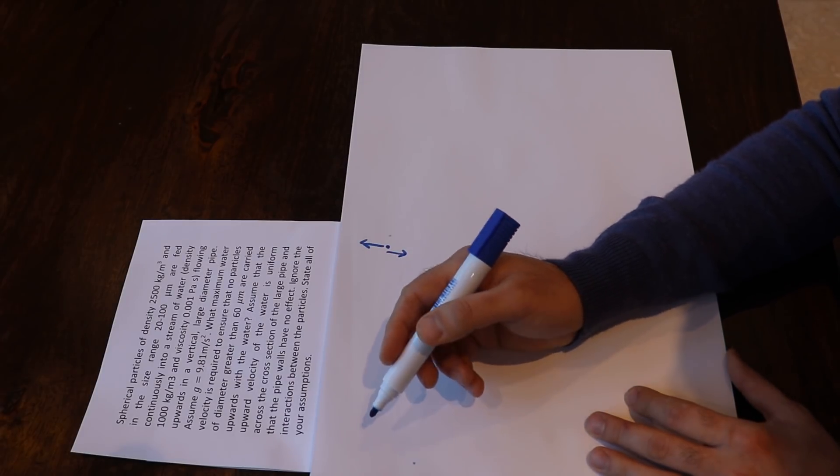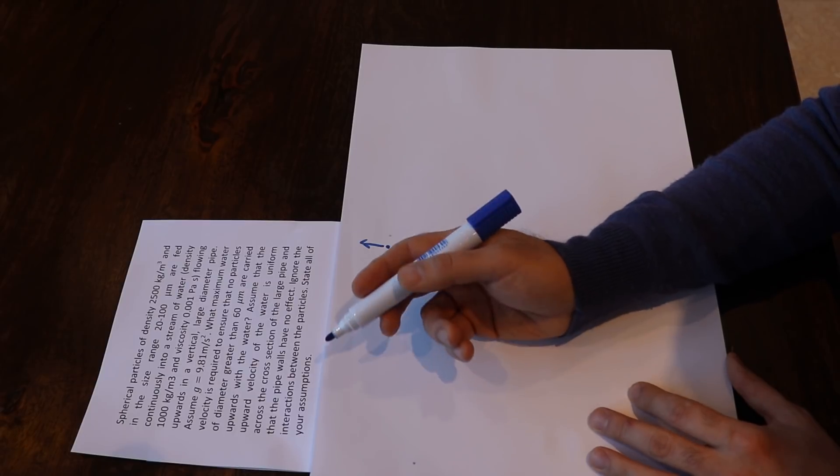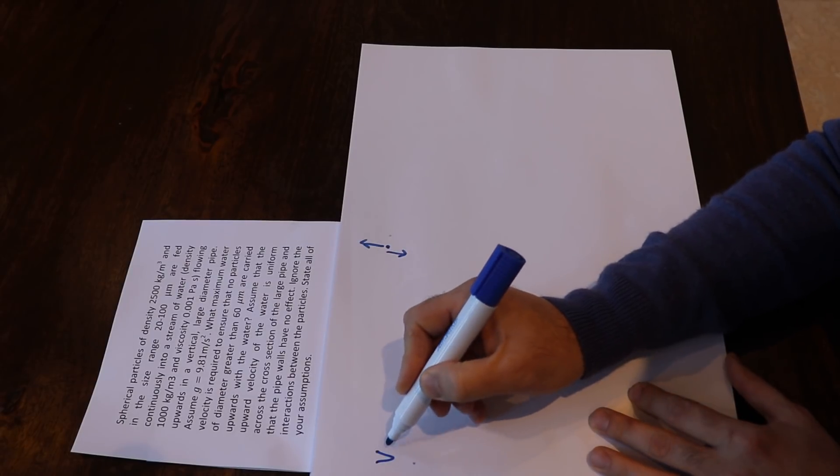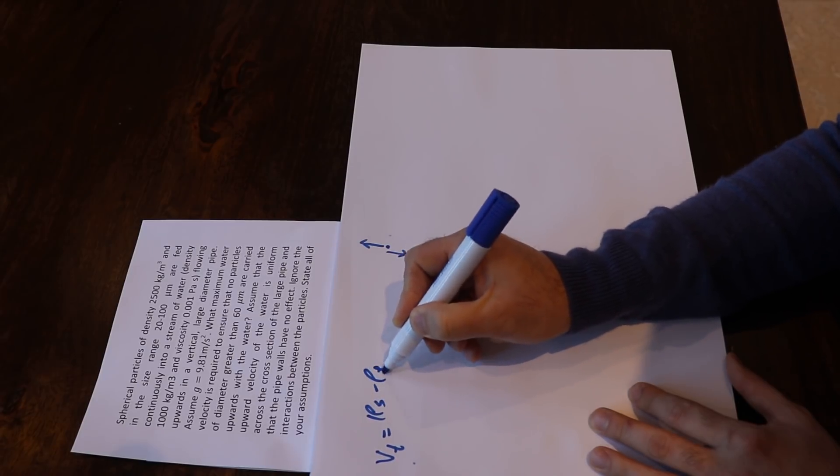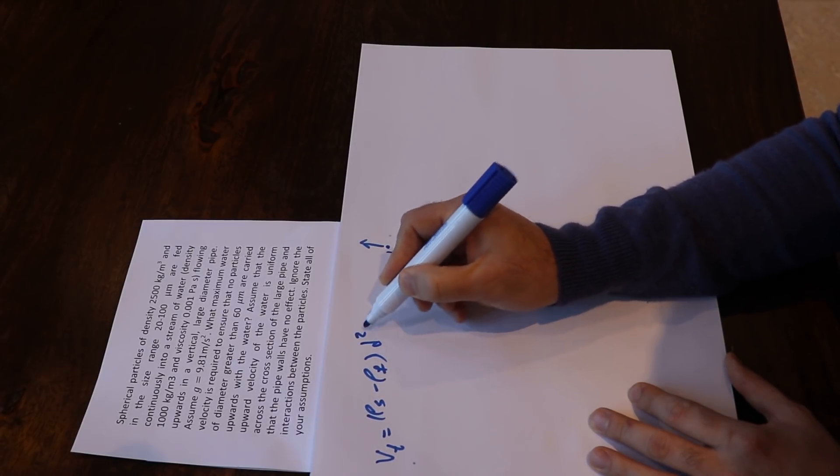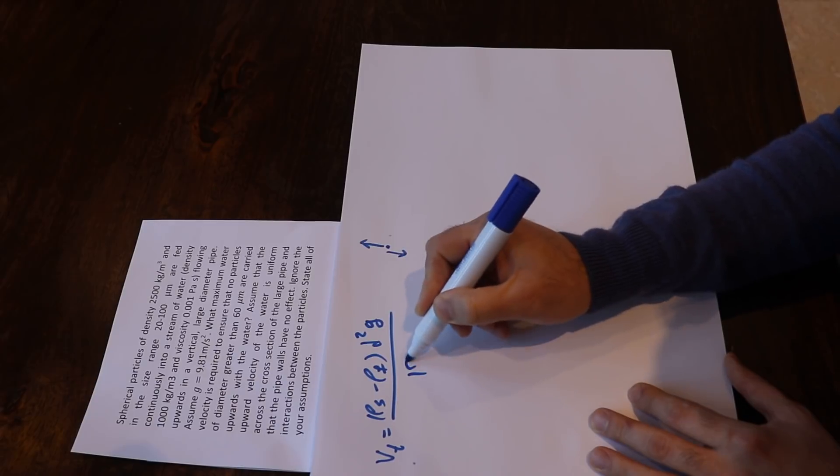So assuming Stokes law applies for the 60 micron particles, you can write: terminal velocity = (ρs - ρf)d²g / 18μ.